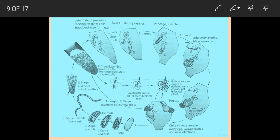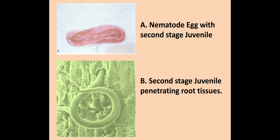The life cycle takes longer at lower or higher temperatures. When the egg hatches, the infective second stage juvenile migrates to an adjacent part of the root, or it infects new roots of the same plant or roots of other plants. The image shows nematodes acting with the second juvenile stage.